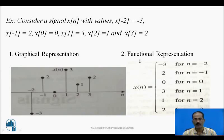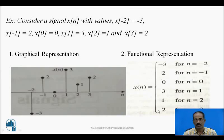The second method of representation is functional representation. In functional representation, the values of x(n) are -3, 2, 0, 3, 1, 2, with the corresponding value of n given. For n = -2, its value is -3; for n = -1, its value is 2. The corresponding value of x(n) is given for different values of n.